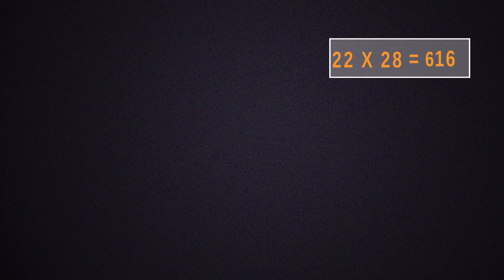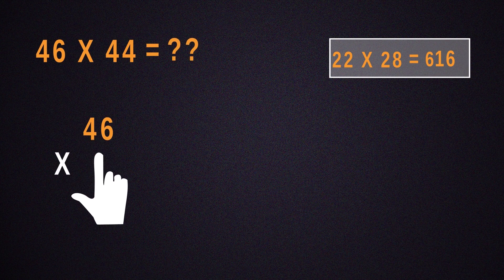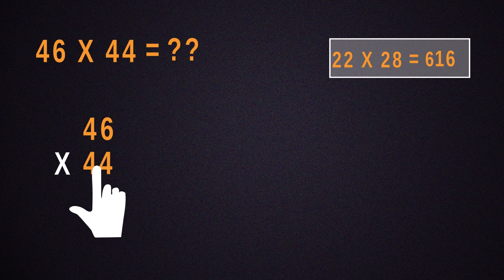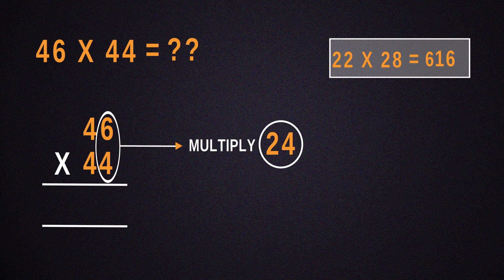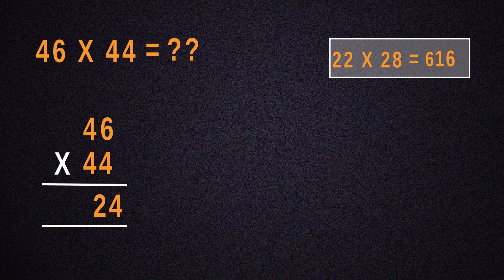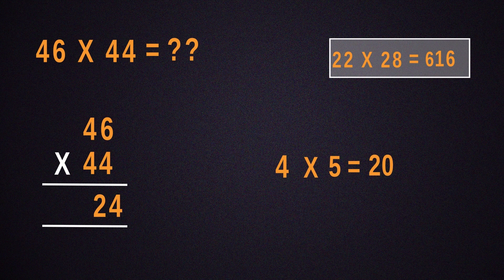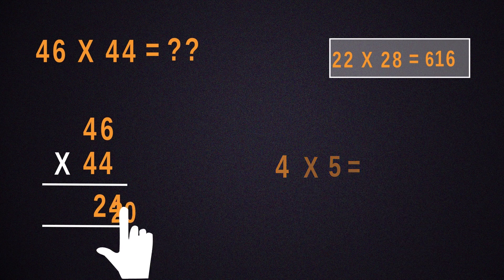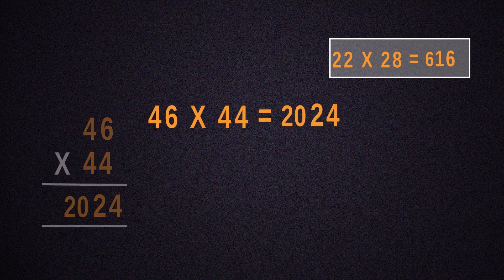Similarly, let us see how to multiply 46 by 44. For that, the number obtained by multiplying 6 by 4 will be 24, so that should be put down. Then, multiply the number 4 with its next digit, which is 5. This gives you 20. Place the result next to 24 and we get 2024.